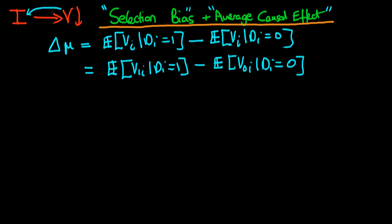So there was a reverse causal effect operating in the opposite direction to the one we were actually interested in. In the last video we started to derive an expression for the difference in means we would obtain by comparing the simple means of the two different groups, and we got this expression here. Now what we can do is make it into something a little bit more easy to deal with.